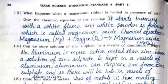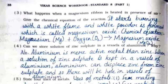Third: what happens when a magnesium ribbon is heated in presence of air? It burns with a white flame and white powder (magnesium oxide) is formed. Chemical equation: magnesium + oxygen → magnesium oxide.